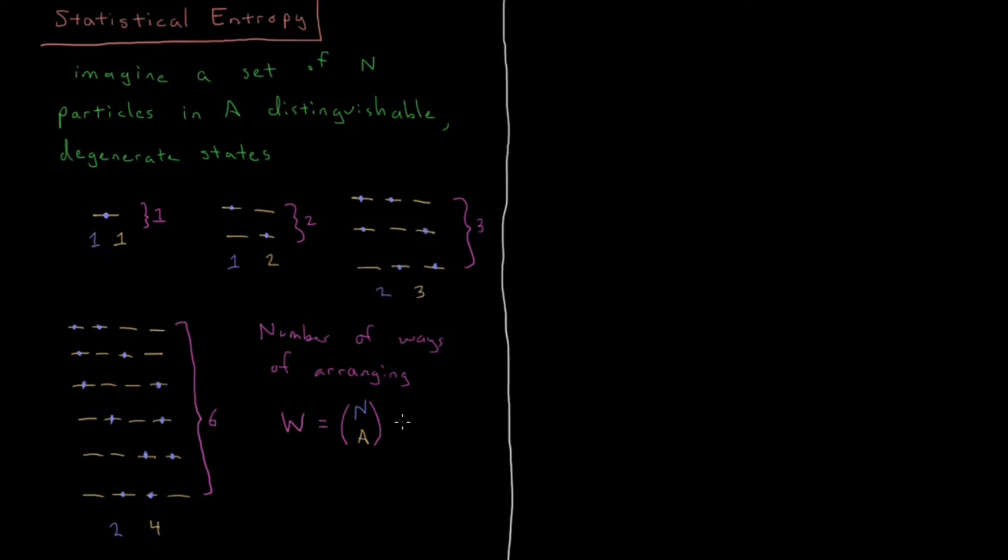If you're not familiar with this type of notation, then this would be N factorial over A factorial times N minus A factorial. So that's what you mean when you see N choose A here, N factorial over A factorial times N minus A factorial.